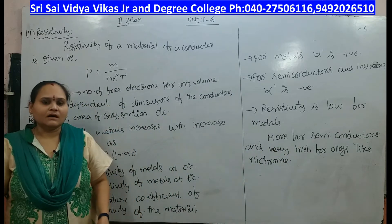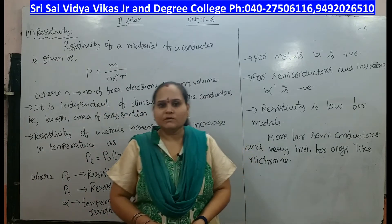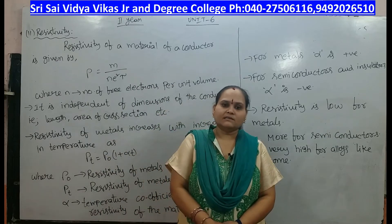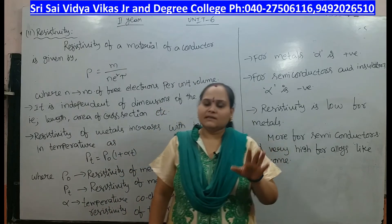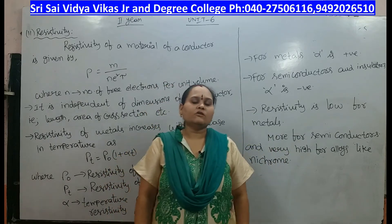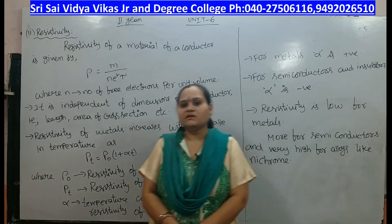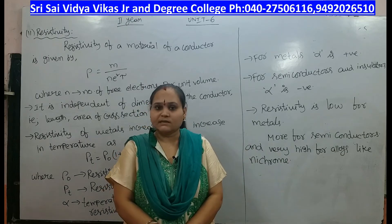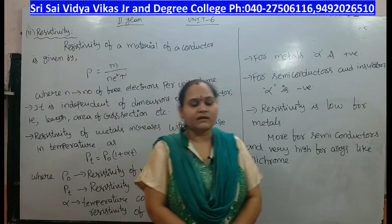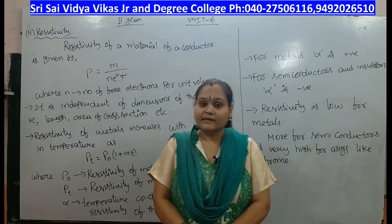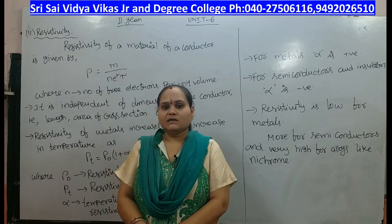What is meant by ohmic conductors? Those conductors which obey Ohm's law — that is, satisfy the condition V equal to IR — are called ohmic conductors; otherwise they are non-ohmic conductors. Examples of ohmic conductors are all metallic conductors. Non-ohmic conductors include alloys, transistors, diode valves, and triode valves.